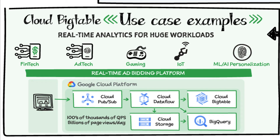Here's an example of a real-time bidding platform where hundreds of thousands of click-throughs are ingested in Google Cloud using PubSub messaging service. Then they're processed in Dataflow and stored in Cloud Bigtable. In parallel, this data is sometimes also stored in Cloud Storage, which acts as a data lake, or BigQuery, which acts as a data warehousing and analysis solution.